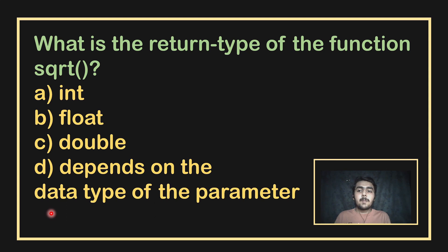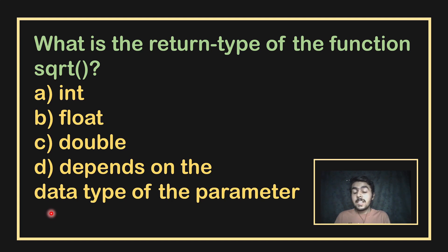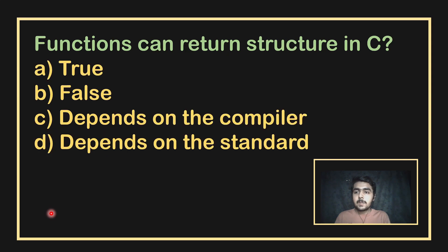What is the return type of the sqrt (square root) function? The sqrt function returns decimal results as well, so its return type is double.